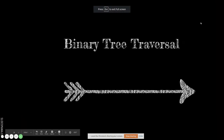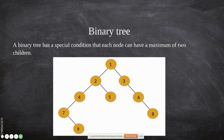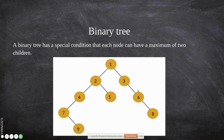In this video we are going to see binary tree traversal. In the previous videos we saw different types of binary trees; now we will see how you can visit a binary tree. A binary tree has a special condition that each node has a maximum of two children only — not three, four, etc. It can have one, two, or zero children. This type of tree is called a binary tree.